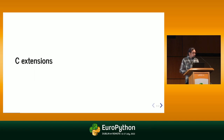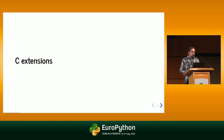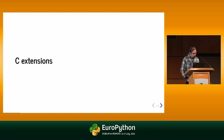Cython clearly relies on the C API. You also have other possibilities to write extensions in statically compiled languages — you can use C++ directly, or PyBind11, or you can write extensions in Rust. But all of that relies on the C API.